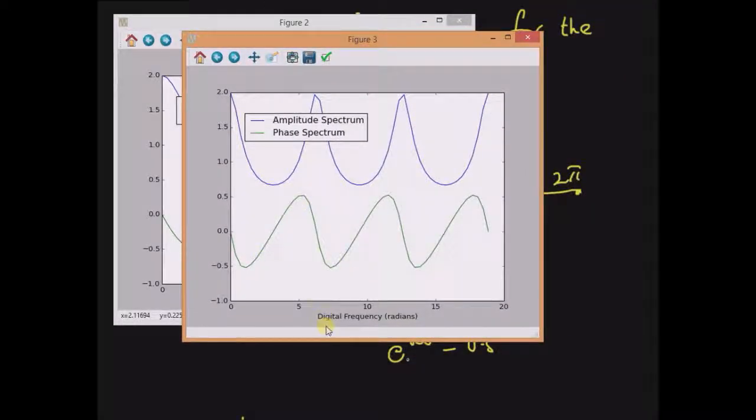This plot shows the discrete time Fourier transform, the amplitude spectrum and the phase spectrum for ω = 0 to 6π. We can clearly see that this function is periodic with a period equal to 2π.